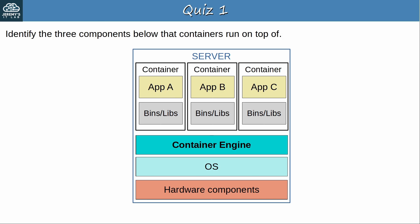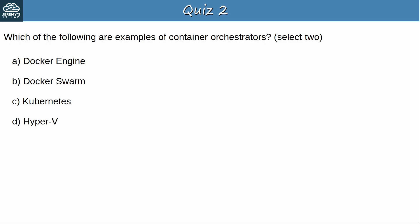Question 2: Which of the following are examples of container orchestrators? Select 2. The answers are B. Docker Swarm and C. Kubernetes. They are both popular container orchestration platforms, although Kubernetes is definitely the most popular. Docker engine is a container engine which containers run on top of — it's not an orchestrator. And Hyper-V is a type 1 hypervisor by Microsoft, not related to containers.